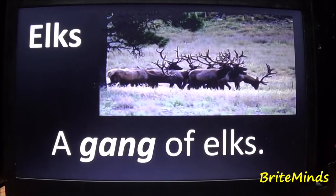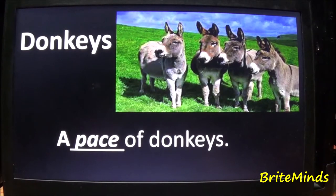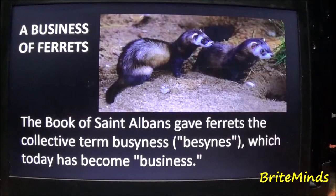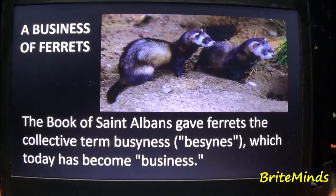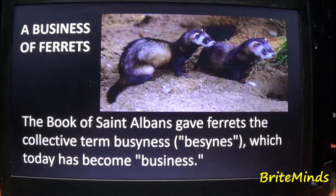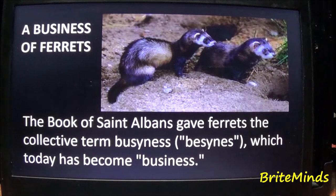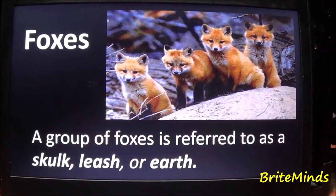Elks: a group of elks is called a gang of elks. Donkeys: a group of donkeys is called a pace of donkeys. Ferrets: a business of ferrets. The Book of Saint Albans gave ferrets the collective term 'business,' which today has become the standard term. Foxes: a group of foxes is referred to as a skulk, leash, or earth.